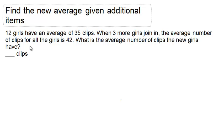Find the new average given additional items. 12 girls have an average of 35 clips. When 3 more girls join in, the average number of clips for all the girls is 42. What is the average number of clips the new girls have?